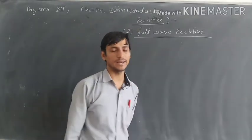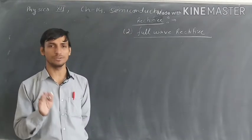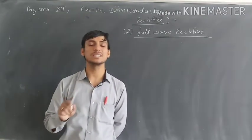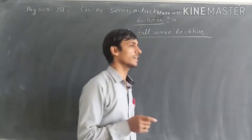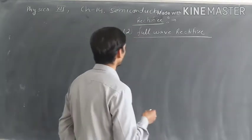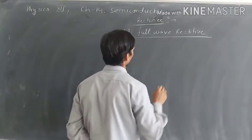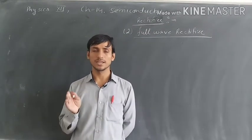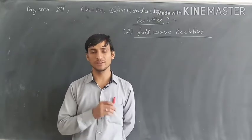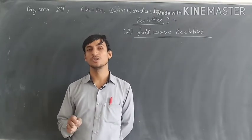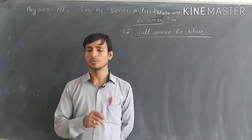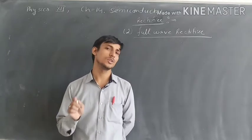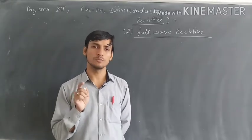Full wave rectifier can convert the complete wave — complete AC waveform — into pulsating DC. In full wave rectifier we have again two types: first one is center tap full wave rectifier, and the second one is bridge full wave rectifier. Bridge rectifier is not in our syllabus; we have only center tap full wave rectifier.